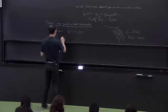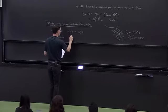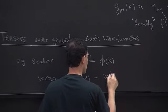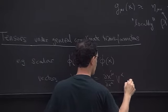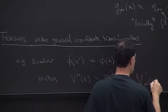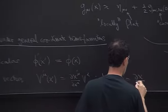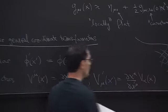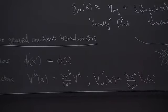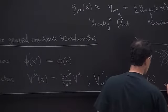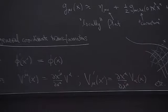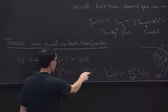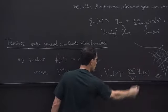What you require is that a scalar field takes the same value, because x and x prime refer to the same point. So phi prime of x_p prime equals phi of x_p. That's the scalar transformation law. Likewise we have vectors, and here we have two kinds — the index can be up or down. The rule is there's always one Jacobian matrix for every index: it's dx prime over dx if the index is up, and dx over dx prime if the index is down.